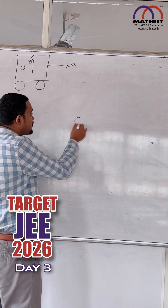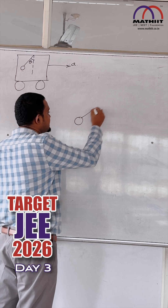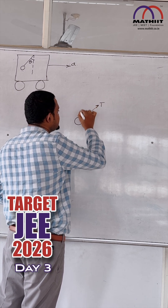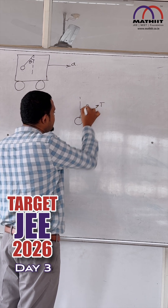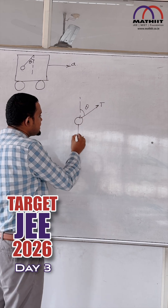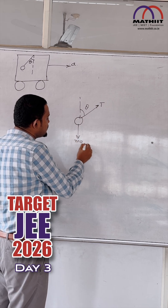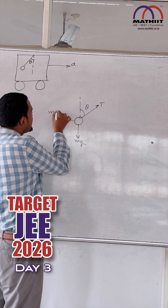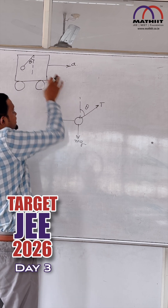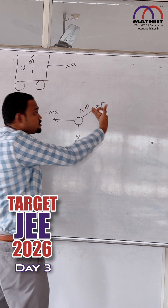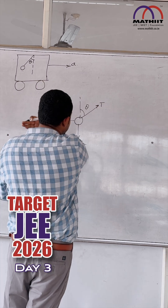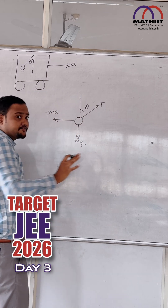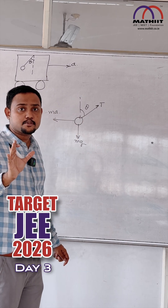So this is the free body diagram of the pendulum. There is a tension T in this direction, and this angle is theta. There is Mg downwards. And there is going to be M times A in the opposite direction, because acceleration is in this direction, so the pseudoforce will be in this direction. Now the pendulum is at rest with respect to the car — it is in equilibrium.